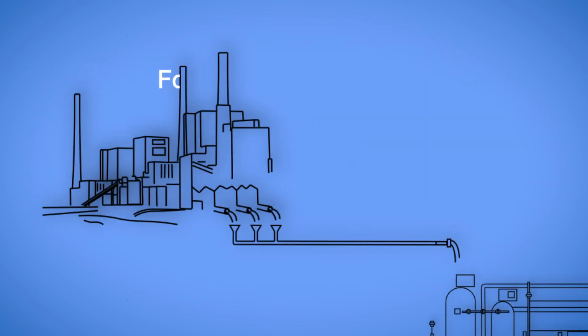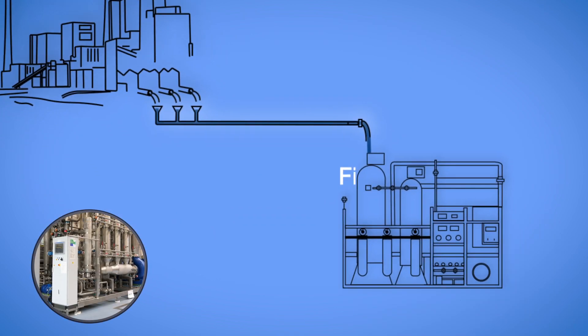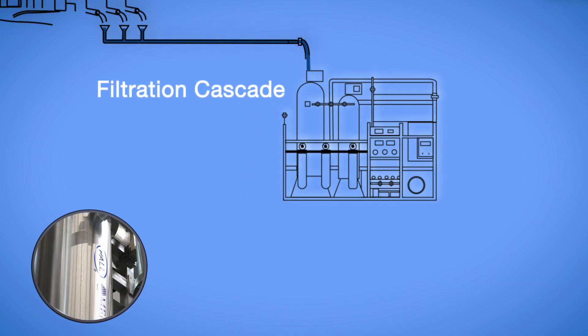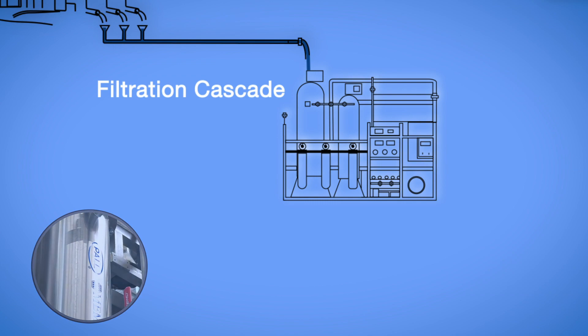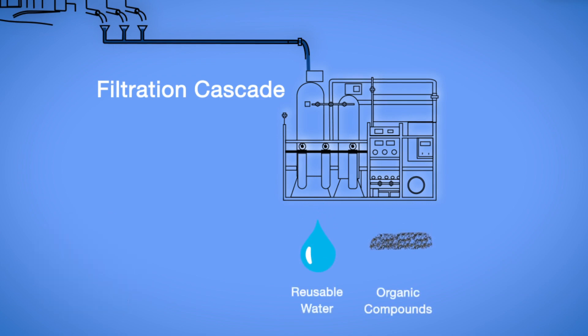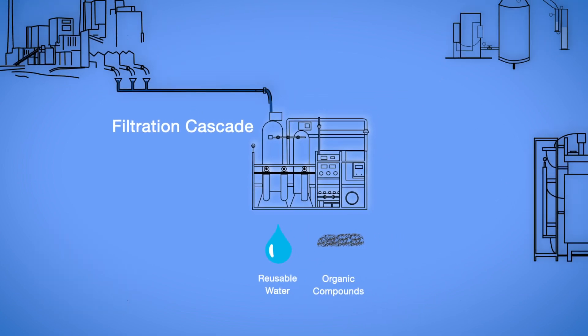The wastewater from the food processing industry goes to a filtration cascade that separates all the solids in the wastewater. In this way, pure water plus compounds of interest are obtained. The water thus obtained, of high quality, can then be reused.